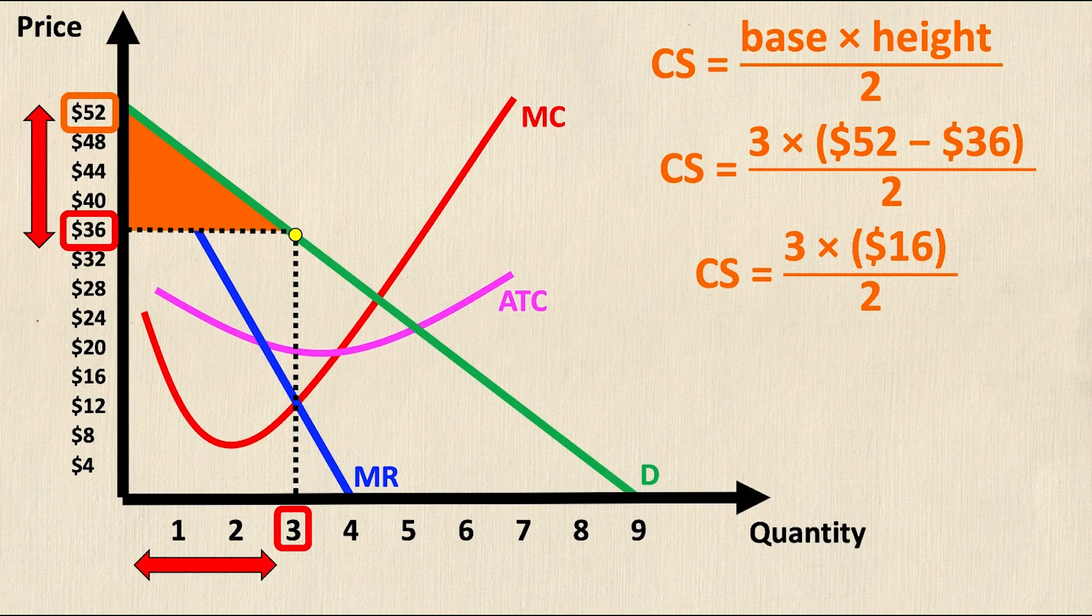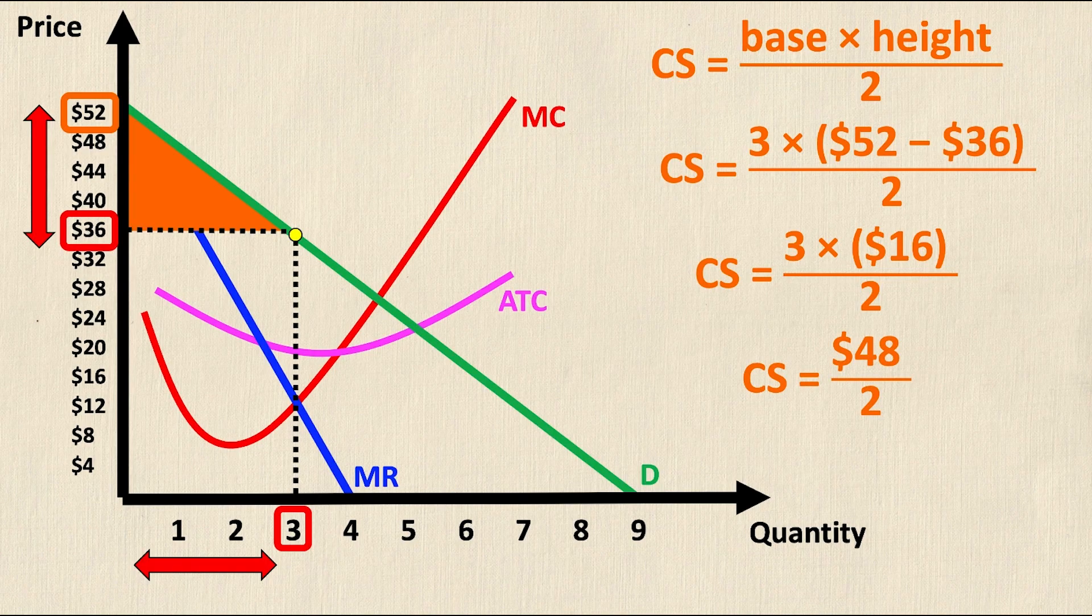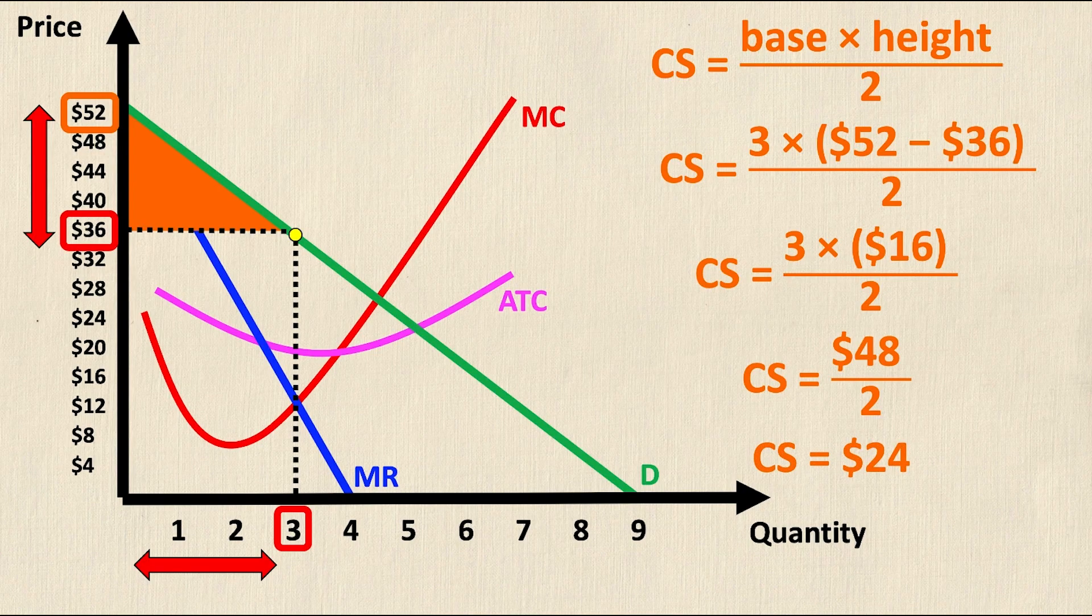Simplifying further, consumer surplus equals $48 divided by 2 and then solving the final step, consumer surplus equals $24.